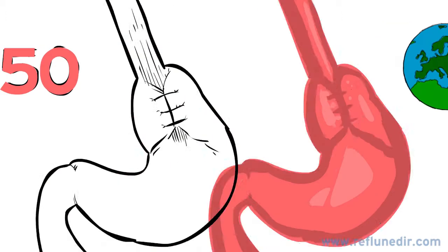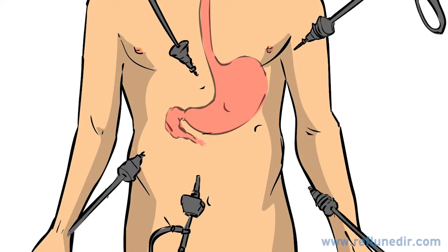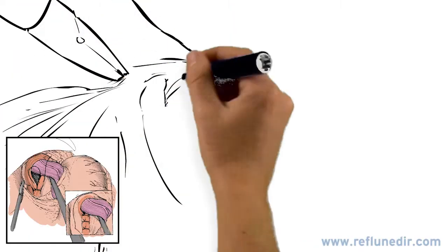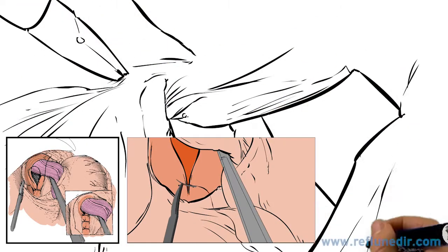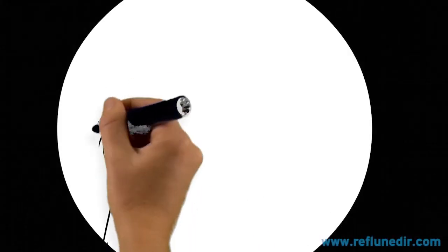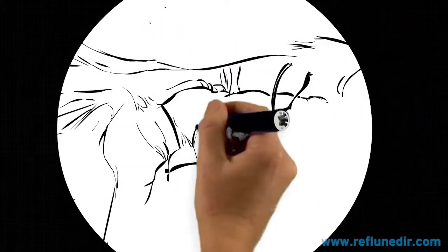In a laparoscopic Nissen procedure, we go through tiny incisions of 3-5 mm, so the abdomen is not cut. First, we prepare and elevate the esophagus and then use stitches to fix the hiatal hernia. After this, we perform what is known as the fundoplication using the upper part of the stomach to make a valve like this.